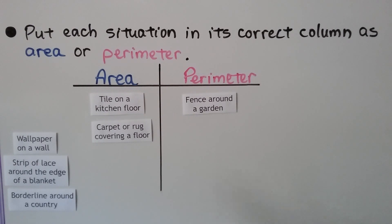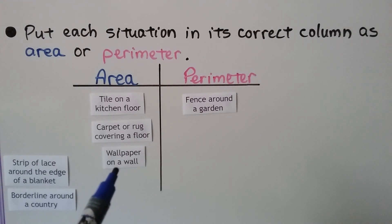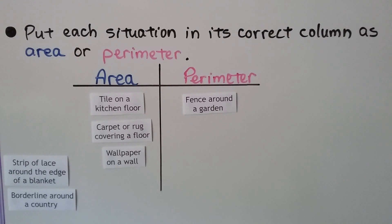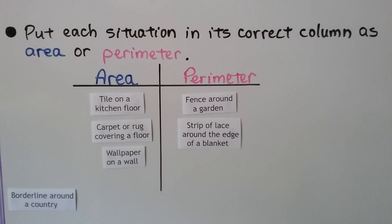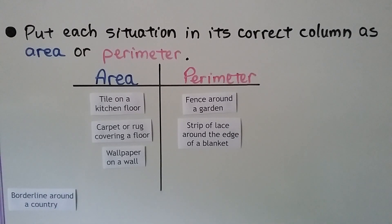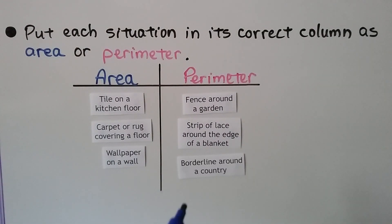Wallpaper on a wall: that's area — wallpaper covers the surface of a wall. A strip of lace around the edge of a blanket: that's perimeter — we see our clue word 'around.' The borderline around a country on a map: that's perimeter — we see 'around' again. It's going around the outside of the country, so that's perimeter.